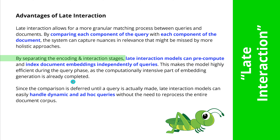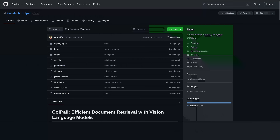This means the late interaction models can pre-compute and index the document embeddings independently of the queries. If you just remember one sentence of late interaction, this is the sentence for you — because this makes the model highly efficient during the query phase, as the computationally intensive part of embedding generation is already completed.